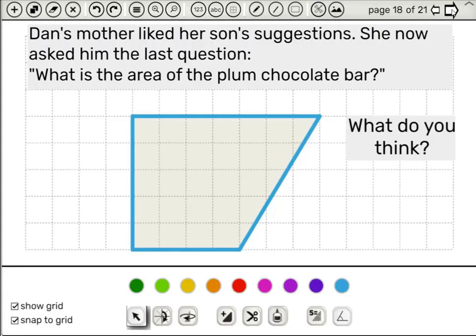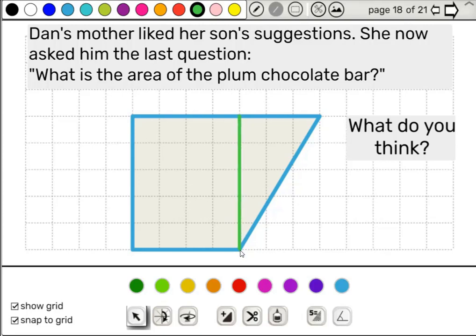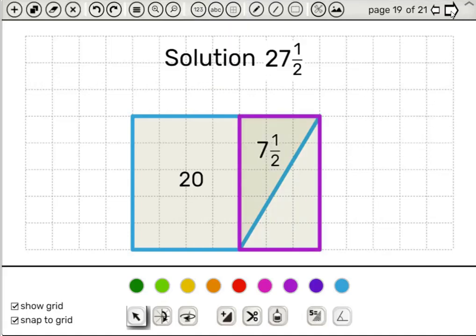Dan's mother liked her son's suggestions. She now asked him the last question. What is the area of the plum chocolate bar? What do you think? Now this is an important question. Maybe some students didn't completely understand. What we expect is that the students draw the line here. This can also be done with this line tool. We click and drag down, and now they can see that we have a rectangle with the dimensions 4 by 5, and the remaining triangle can be blocked off in a rectangle like this. The rectangle of 3 by 5, an area of 15 divided by 2, to get 7 and a half. We can see the solution over here, and we do hope the students reach this generalization.